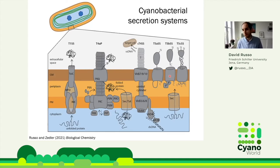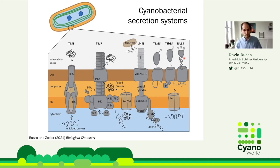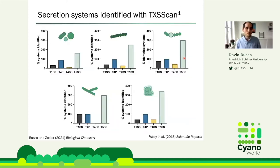Finally, the Type 5 secretion systems — formerly called autotransporters. They encode both the translocation mechanism and the released protein either in one protein or in proteins close together on the genome. In the classical example, a single protein forms a barrel, loops through it, and sticks outside the cell. There are also versions that get cleaved and released, and trimeric versions. Recently more subtypes have been discovered — Type 5d, 5e — making this an active field of research in bacteria, though almost nothing is known about them in cyanobacteria.